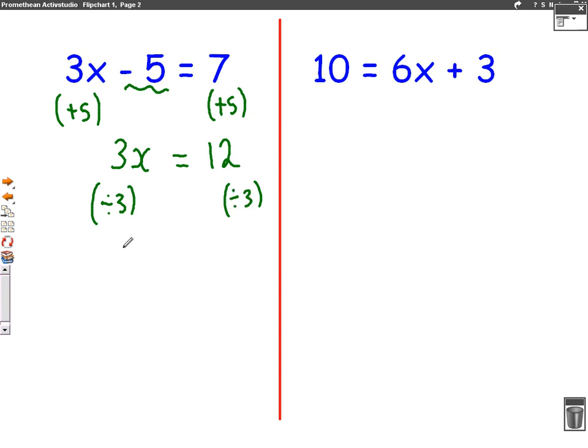So we're left with just x on this side. And on the other side, we have 12 divided by 3 gives us 4. So x is 4 is our answer. This is a very basic equation.